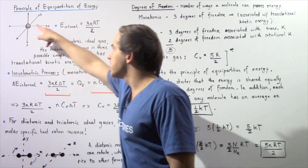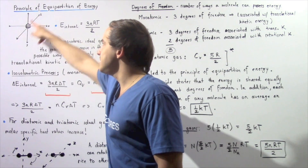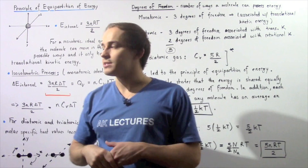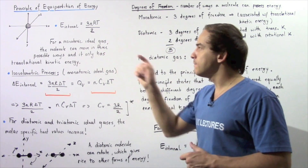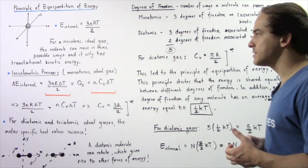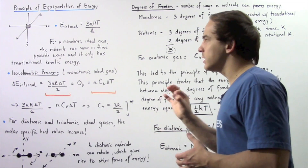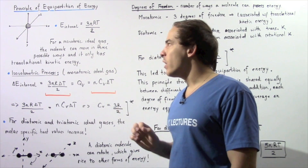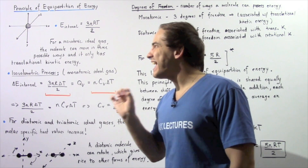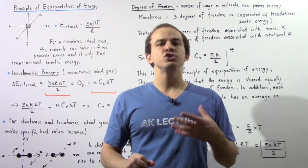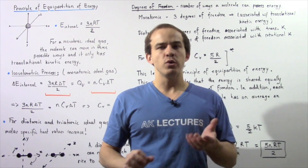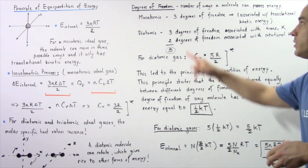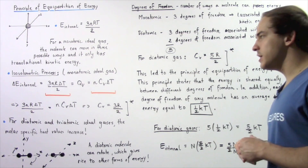A monatomic ideal gas molecule can move along the x-axis, the z-axis, or the y-axis, meaning it can move in three different possible ways. Each way has its own translational kinetic energy associated with it. This will become important when we discuss degrees of freedom.